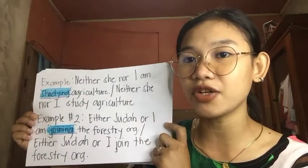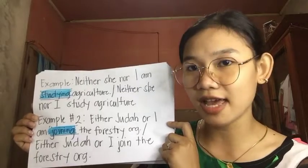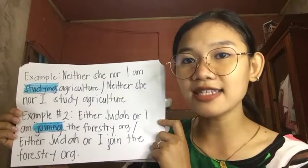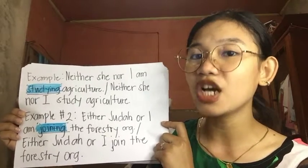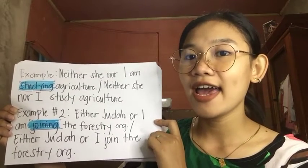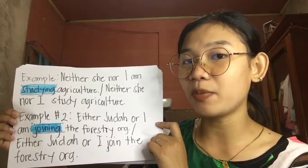Rule number three: when 'I' is one of the two subjects connected by either/nor or neither/nor, put it in the second position and follow it with the base form of the verb. On the first sentence, we put 'I' second and follow it with the singular verb 'am.' On the second sentence, we put 'I' second and follow it with the base form of the verb, changing 'studying' to 'study' and 'joining' to 'join.'